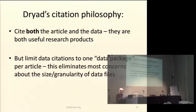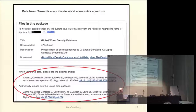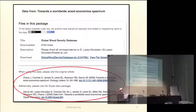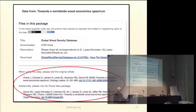Here's Dryad's citation philosophy. We urge people to cite both the article and the data, but to cite the data at the data package level — the data package being all the files pertinent to a certain article. Notably, the list of authors can differ between the article and the dataset, at the author's request, to reflect the differing contributions of people to the creation of the data. An independent data citation can thus provide a reward for members of collaborations who want primary credit for their contributions.